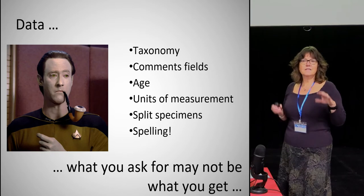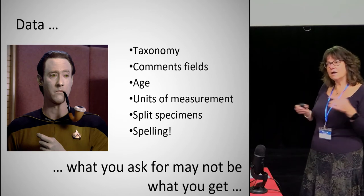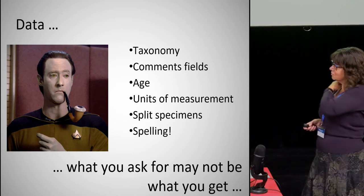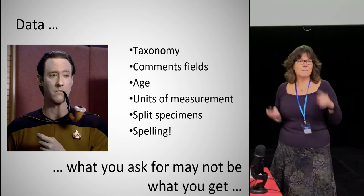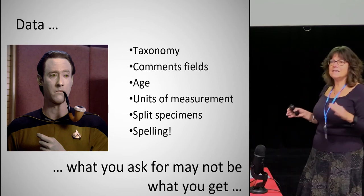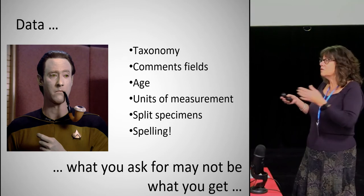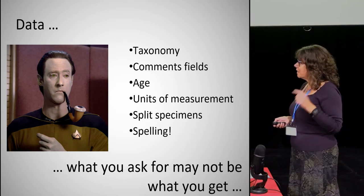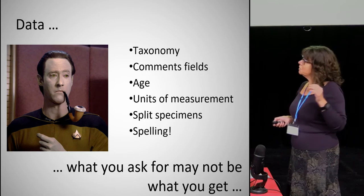What you ask for is not necessarily what you get. Very few contributors submitted data in the way we requested, because everyone manages their data differently — which is fair enough. What became expedient for them was to submit data as they had it, not necessarily matching our data fields. There were many issues — spelling being one, because inconsistent spelling means things slip through search results. Age was another big issue, because everybody defined age in a slightly different way. But taxonomy was absolutely crucial.